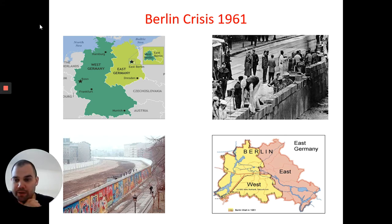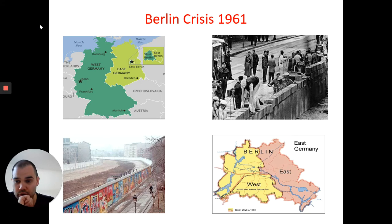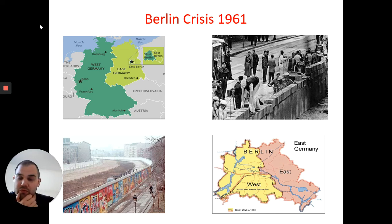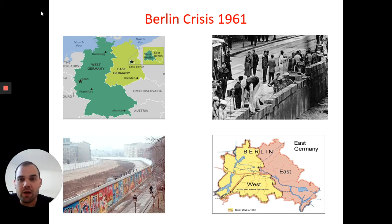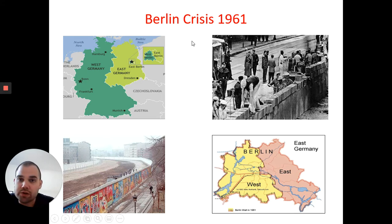Before we look at the Berlin Crisis, we're going to start with a quick 10-question quiz. The first five or six are going to be about the U2 Crisis that we looked at last lesson, and then a few questions going further back about what happened in Germany after the Second World War. Write the title: Berlin Crisis 1961. Write down the answers, give yourself a score at the end, and note any you missed.